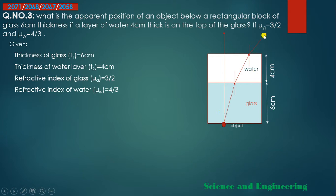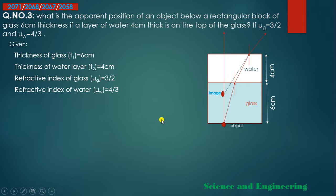Extending the final ray back, we see where the object appears to be — that is the apparent (displaced) position. Now let's find the apparent displacement using the formula. The formula for apparent displacement is: d = t × (1 − 1/μ), where t is the thickness of the medium and μ is the refractive index of that medium.